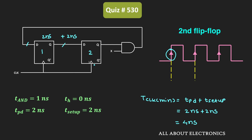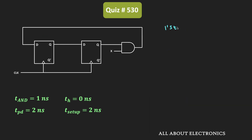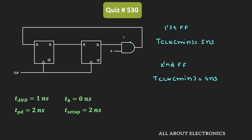If we consider just the second flip-flop, the minimum required clock duration is 4 nanoseconds. For the first flip-flop it is 5 nanoseconds. For the given sequential circuit, we must consider the worst-case scenario — if we select T_clock_min as 4 nanoseconds, we will have a setup time violation for the first flip-flop. Therefore, we must take the worst case: the minimum required clock duration for the circuit is 5 nanoseconds.